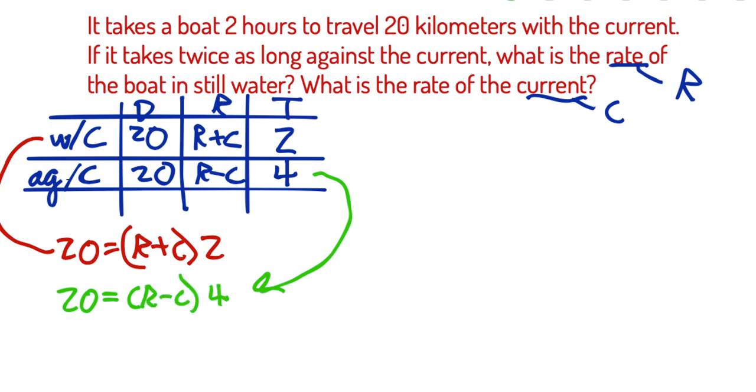Now, one thing, you guys are pretty observant. You're like, hey, you know what? 20 equals 20. Why don't we set them equal to each other? And I'm like, dude, genius. Good idea, Jenny. So what we're going to do is say R plus C times two, that's the distance with the current, is going to be the same as the distance against the current, R minus C times four.